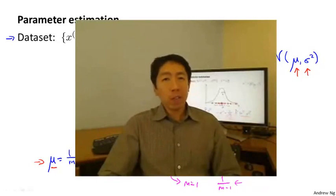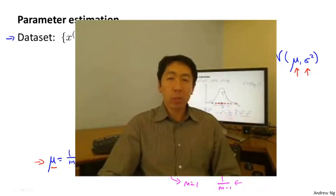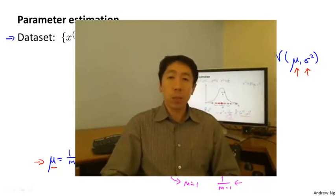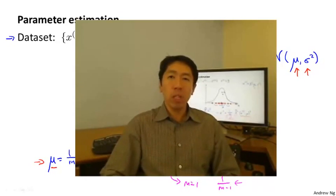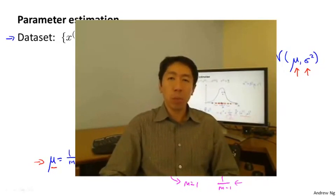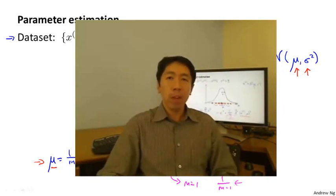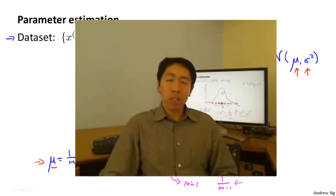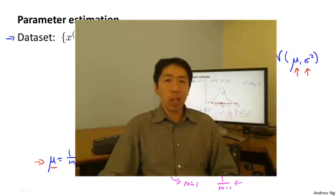So hopefully you now have a good sense of what the Gaussian distribution looks like, and how to estimate the parameters mu and sigma squared when given a training set that you suspect comes from a Gaussian distribution with unknown parameters. In the next video, we'll start to apply this to develop an anomaly detection algorithm.